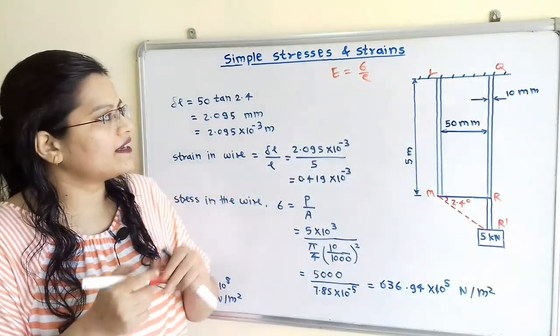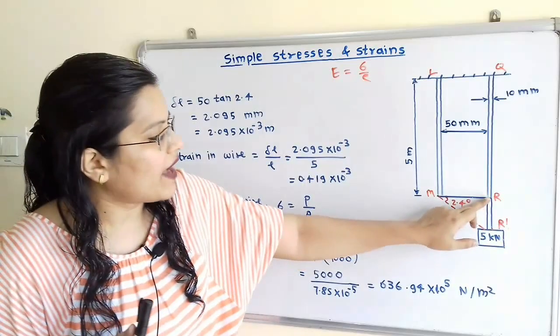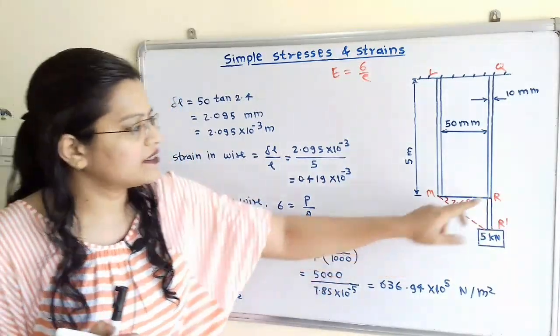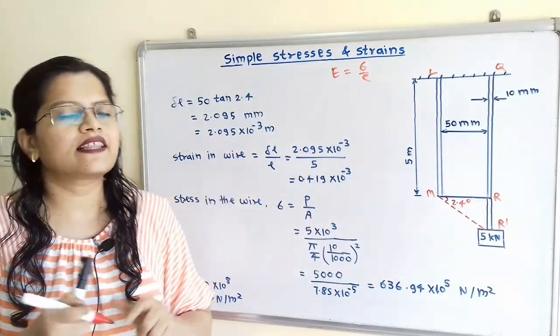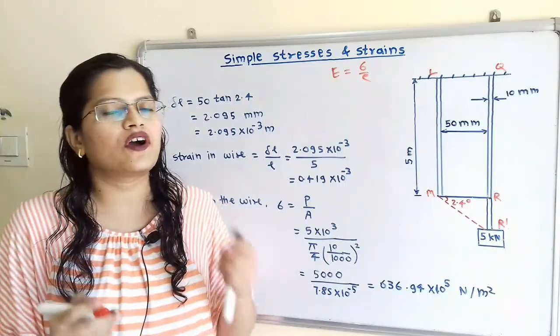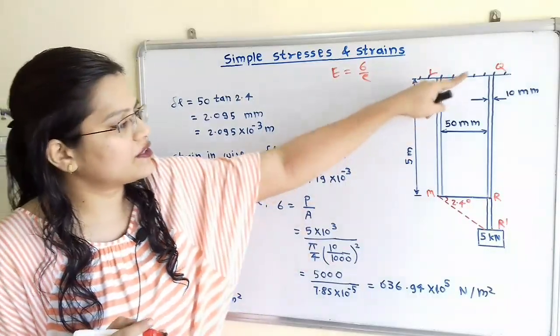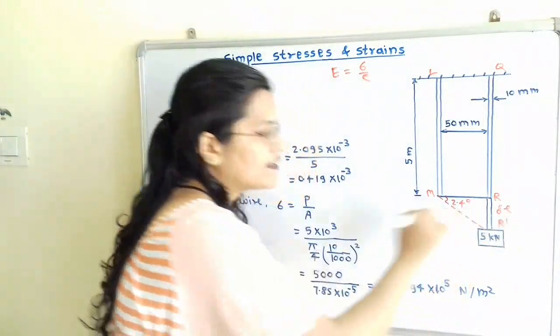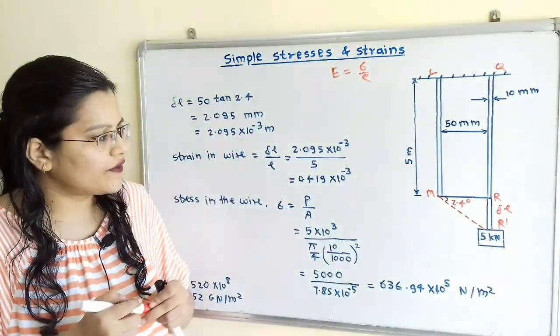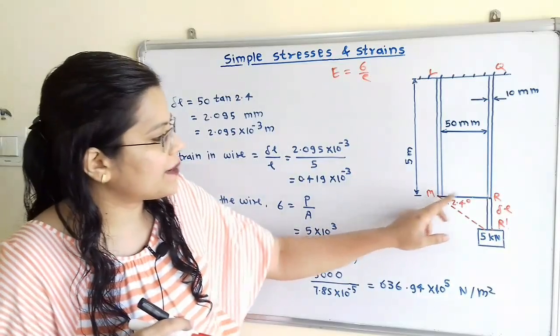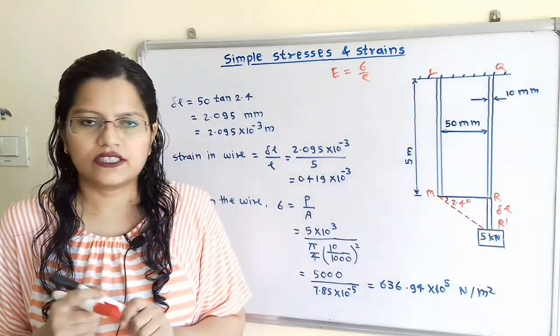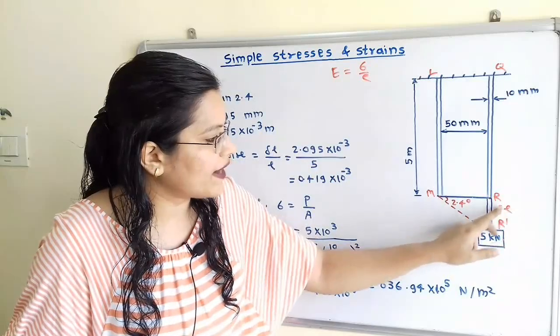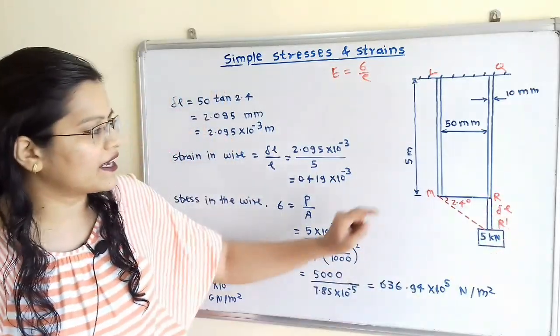So first we have to find out the value of delta L that is RR'. So delta L, that means the elongation or the increase in the length of this wire QR. So how to find out the value of delta L? Now we will observe the triangle MR'R'. Now from this triangle, if we have to find out the value of delta L,